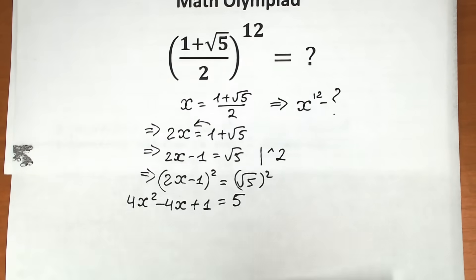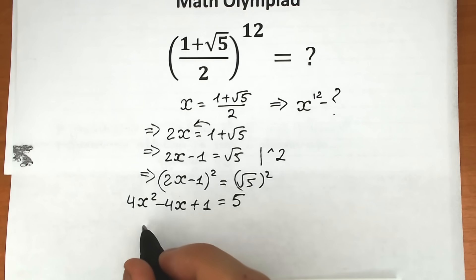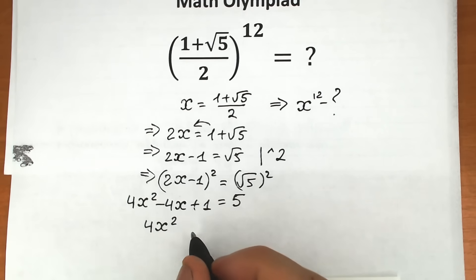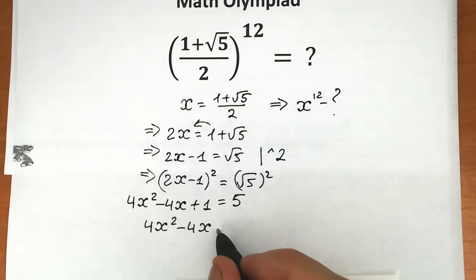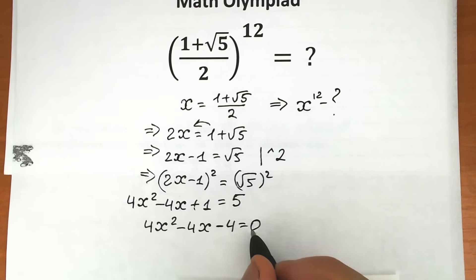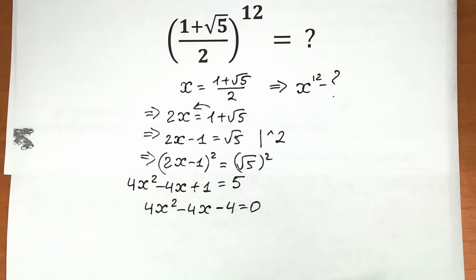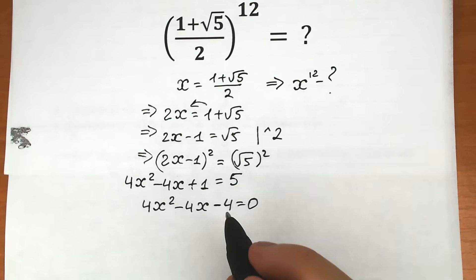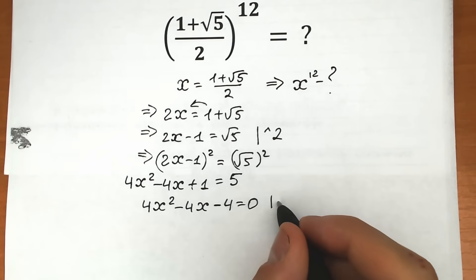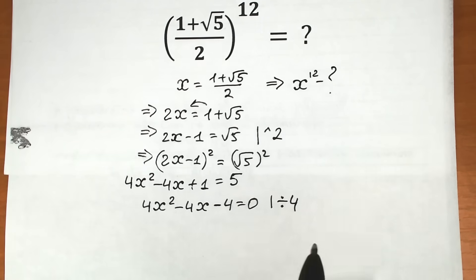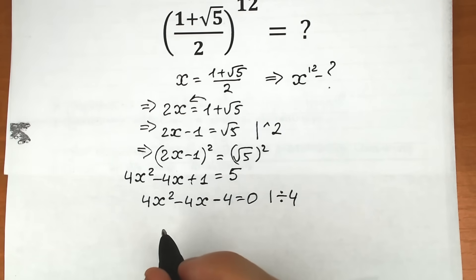Now let's bring the constant from the right to the left. We have 4x² − 4x + 1 − 5 = 0, which gives 4x² − 4x − 4 = 0. Now let's divide both sides by 4, since every term has a factor of 4.